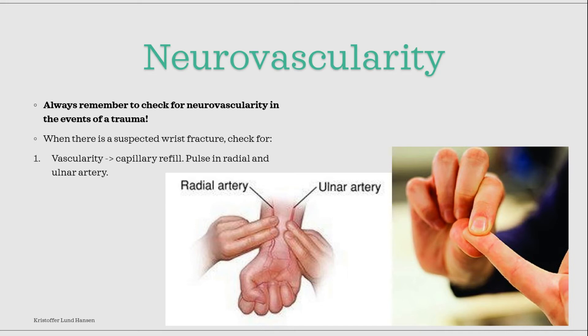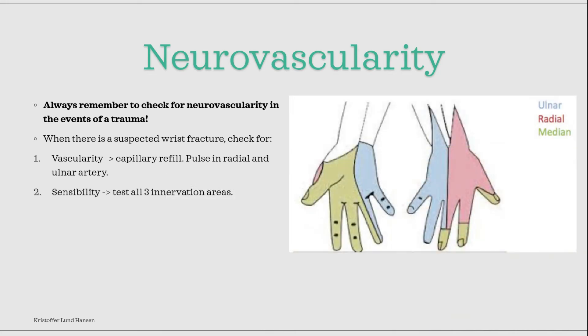Second, you should also check the pulse of the radial and ulnar artery. You don't have to measure the exact pulse — you just have to make sure that the pulse is present. Next, check for sensibility. This is done by lightly touching somewhere within each of the three sensory areas. I like to touch the area of the anatomical snuffbox for the radial nerve, the tip of the second and third finger for the median nerve, and the side of the fifth finger for the ulnar nerve. If the patient can feel all of this, then it's fine.